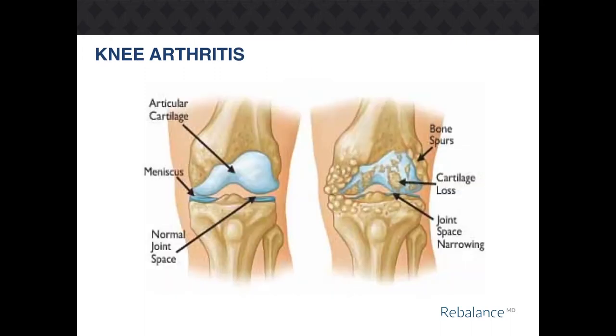In an osteoarthritic knee, the cartilage within the joint softens and wears away. This causes the knee joint to become rough and irregular and prevents smooth and painless motion within the joint.